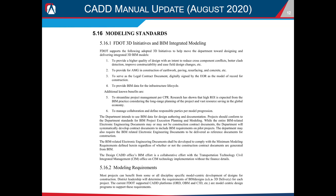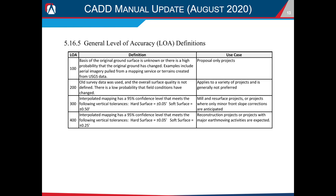The most relevant of the new sections to discuss is going to be 5.16 modeling standards. This section defines the overall objectives of the FDOT 3D initiative and modeling requirements. One important thing to note is that modeling requirements will be determined at the district level for each individual project, so it seems like it's going to be more of a district-by-district, case-by-case approach, at least to begin with. It's probably one of the most important sections to us — it outlines what can be asked of us in terms of a 3D model.